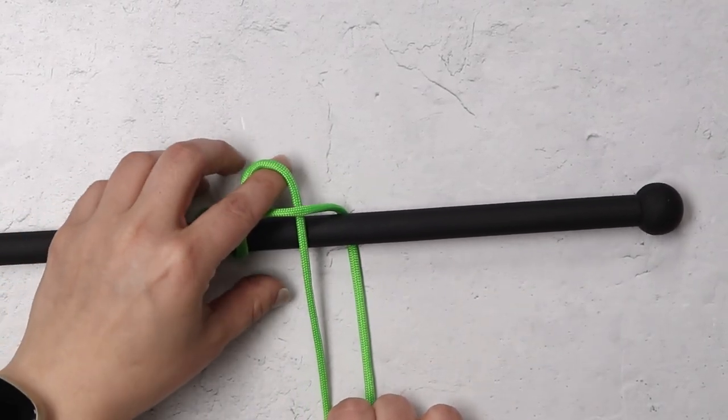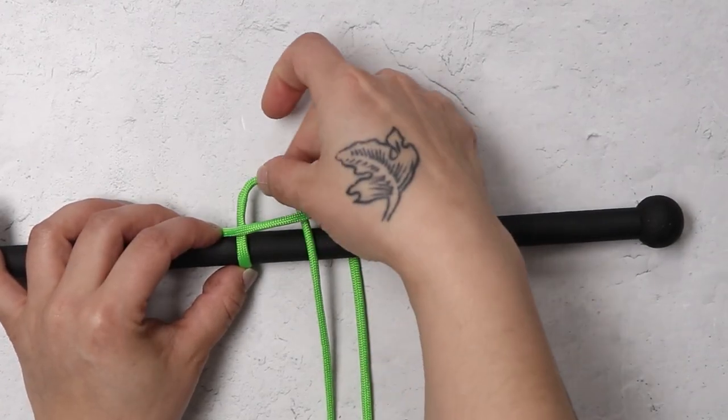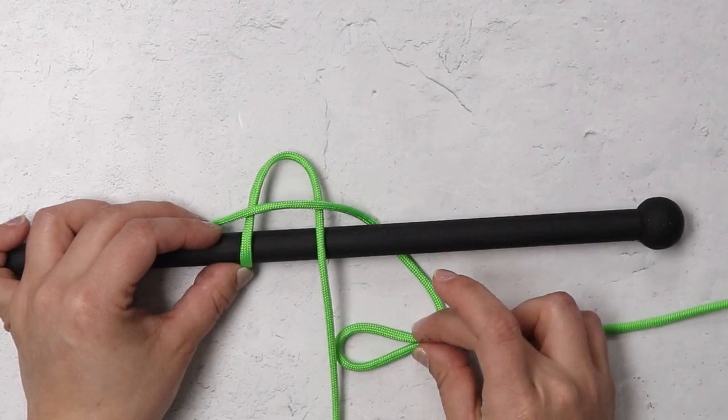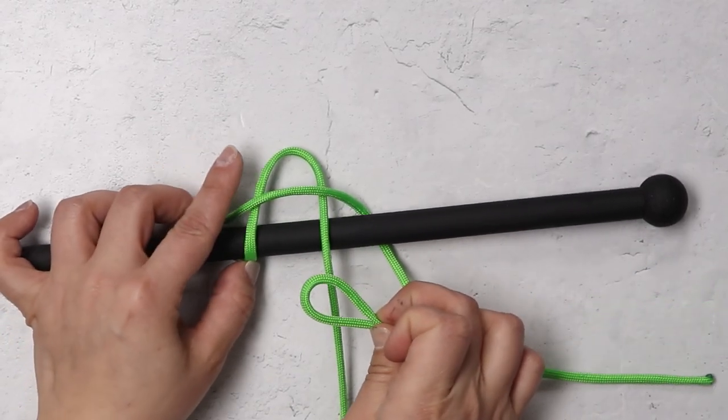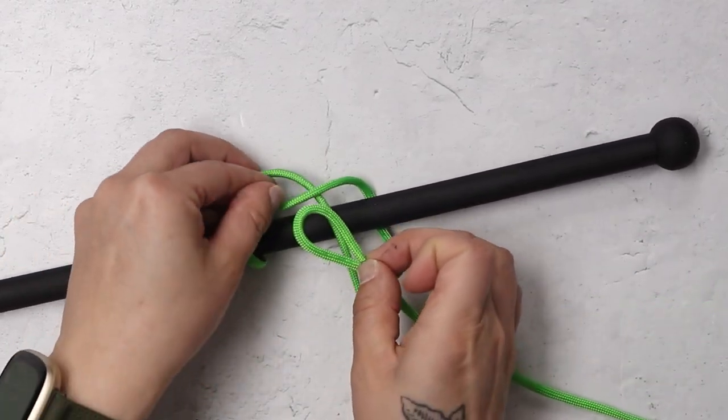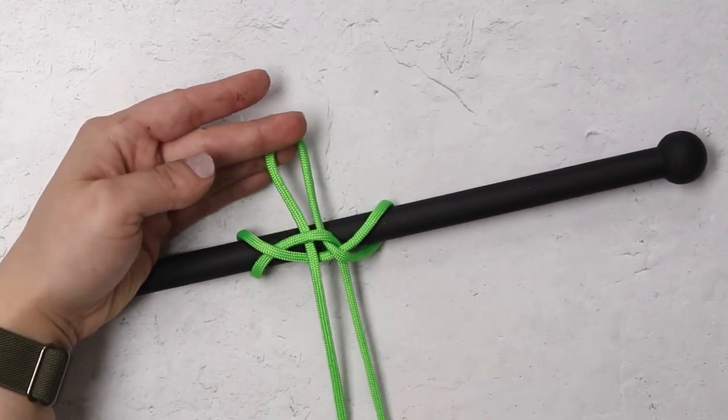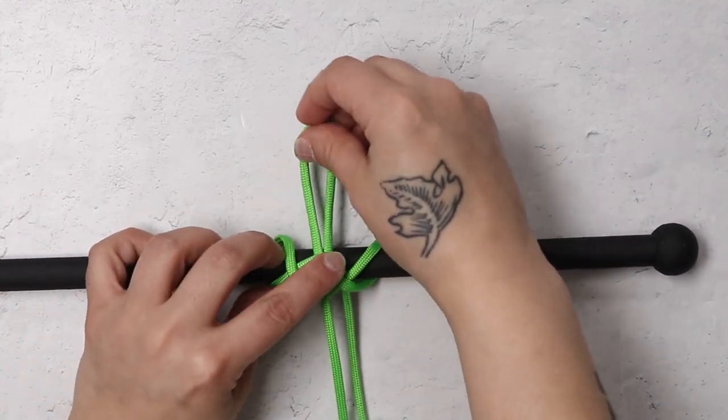And now your only working end left will be the one to the right hand side. So you'll take that working end, make one more bite, and you'll end up passing that through the loop you initially made at the beginning of your knot. And what's nice about this one is it does have two very definite tightening and loosening points.